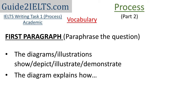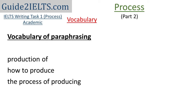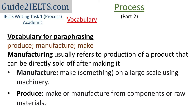Or we could write 'the diagram explains how' followed by the details. If we have the word 'production' in the question, we could change it to 'how to produce' or 'the process of producing.' The words 'produce' and 'manufacture,' although similar, are not interchangeable — there is a slight difference. Manufacturing usually refers to production of a product that can be directly sold off after making it. One word that can replace both is the simple word 'make.'